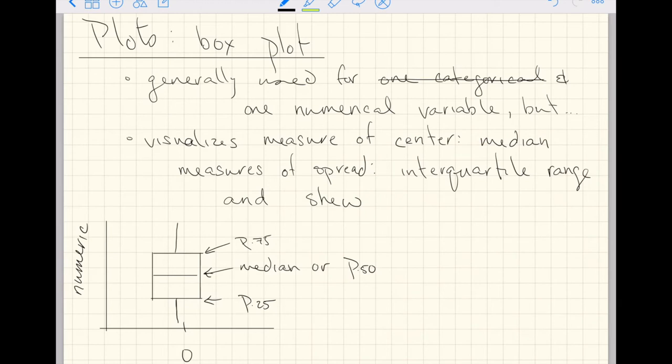Now on the other hand, when the whiskers are of differing lengths, then we say there is right skew. Now remember when you're thinking of a histogram or a density plot, skew defines the tail.